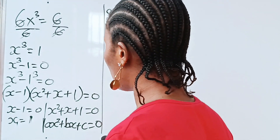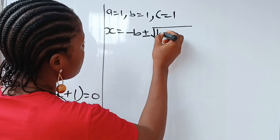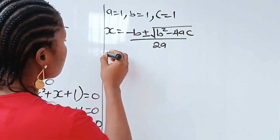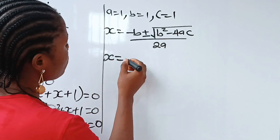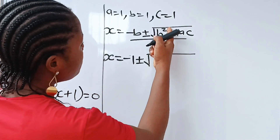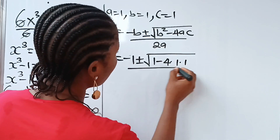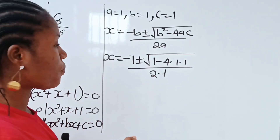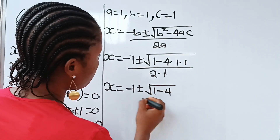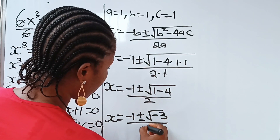We are going to use the quadratic formula, which states that x equals minus b plus or minus the square root of b squared minus 4ac, all divided by 2a. So we have x equals minus 1, plus or minus the square root of 1 squared minus 4 times 1 times 1, divided by 2 times 1. That gives us x equals minus 1 plus or minus the square root of 1 minus 4, divided by 2, which is minus 1 plus or minus the square root of minus 3, divided by 2.